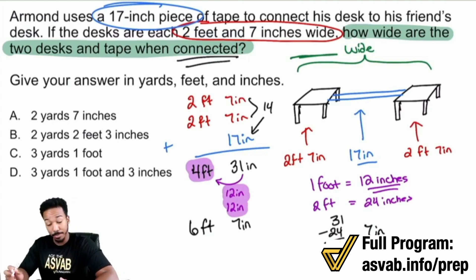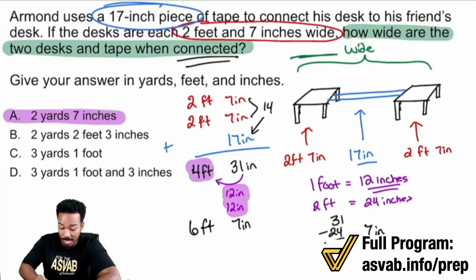Now from here, honestly, you can look at your answer choices and be like, yo, this one ends in seven inches, none of these has seven inches at the end so we can pretty much say that A is the answer if we wanted to.